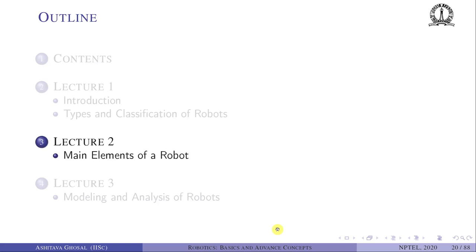With this, we come to the end of this lecture. We have looked at the definition of a robot, its types and classification, and seen videos of robots from the internet as well as research done at IISc. In the next lecture, we will look at the main elements of a robot.